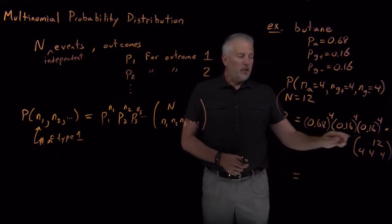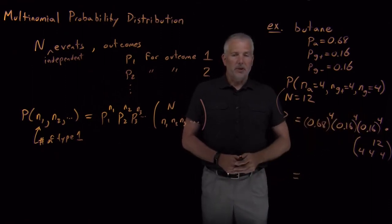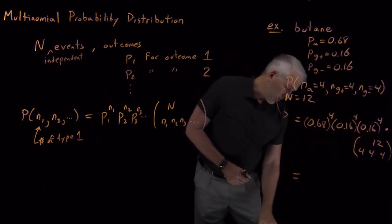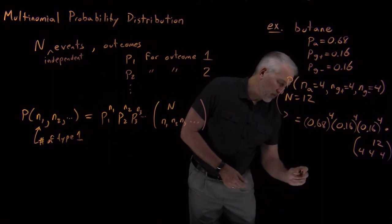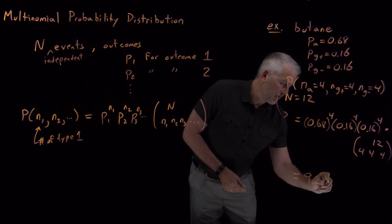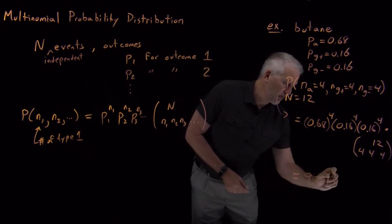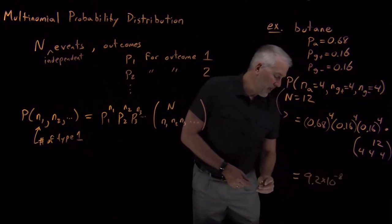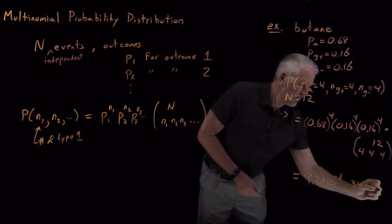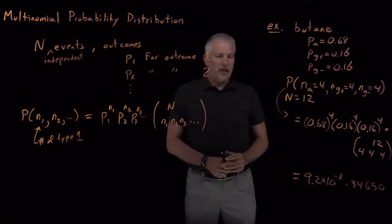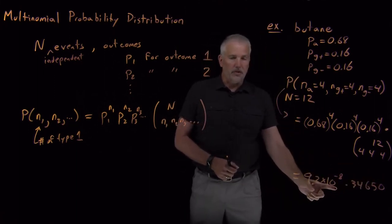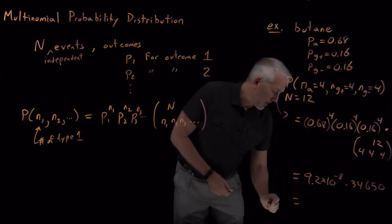So this is a relatively small number. These fractions multiplied by themselves a number of times, multiplied by a relatively large number. When we combine all those two things together, first of all, the decimals by themselves give us 9.2 times 10 to the minus eighth. And the multinomial coefficient is 34,650. So again, the multinomial coefficient is large. The probabilities are relatively small.